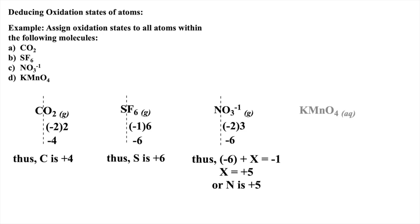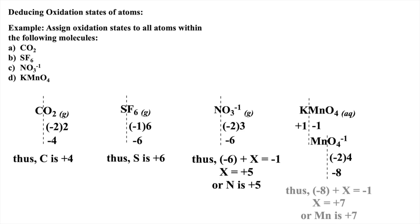In the next example, potassium permanganate simplifies into plus one for the common ion of potassium and negative one for the polyatomic anion permanganate. Now, we simply assign oxidation states to the manganese and oxygen atoms. Again, oxygen is negative two. Thus, to deduce the oxidation state of manganese, it may help to think of this as negative eight plus the oxidation state of manganese equals negative one. Thus, manganese must have an oxidation state of plus seven.